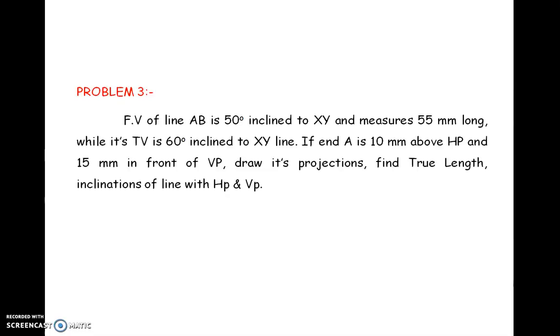My problem statement is: Front view of line AB is 50 degree incline to XY and measures 55mm long, while its top view is 60 degree incline to XY line. If end A is 10mm above HP and 15mm in front of VP, draw its projections and find true length and true inclinations of line with HP and VP.